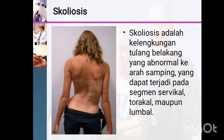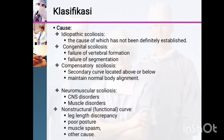This can happen in the cervical, thoracic, or lumbar segments, as shown in the picture. The first classification of scoliosis is by its cause. The first type is idiopathic scoliosis, where the cause has not been definitely established and is still unknown.